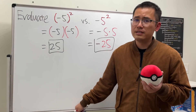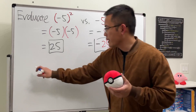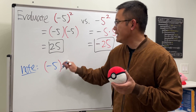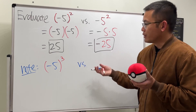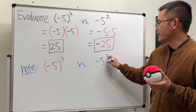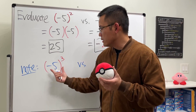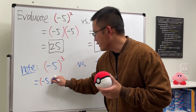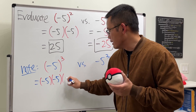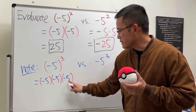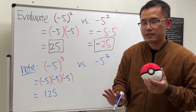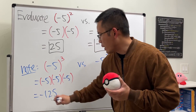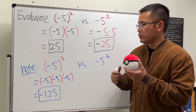Sometimes maybe the parentheses doesn't matter, so let's look at this one. If the question is asking us to evaluate negative 5 to the third power with parentheses, the third power means we write it down three times and multiply: negative 5 times negative 5 times negative 5. 5 times 5 times 5 gives us 125, and negative times negative is positive, times another negative gives us negative — so the answer is negative 125.